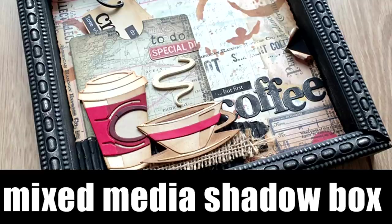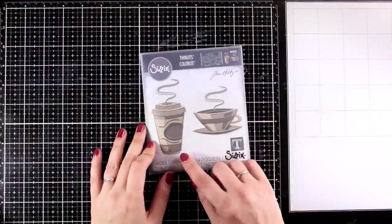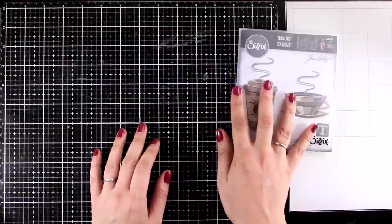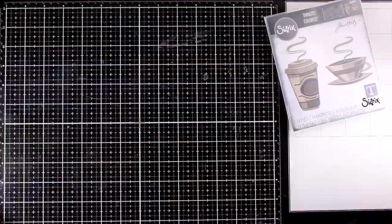Hi everyone and welcome back to another Mixed Media Tuesday. Today I will create a shadow box and the inspiration came from this die set, a C6 die designed by Tim Holtz. I will create something about coffee, but you can easily adjust the idea and make it all about tea.